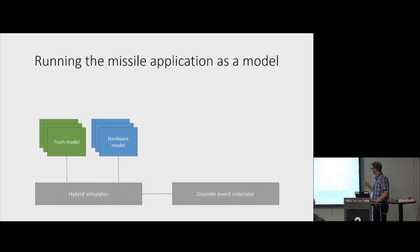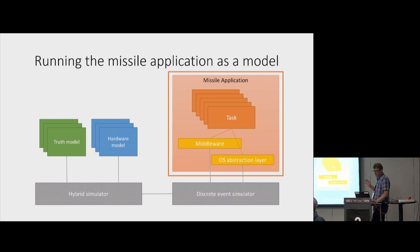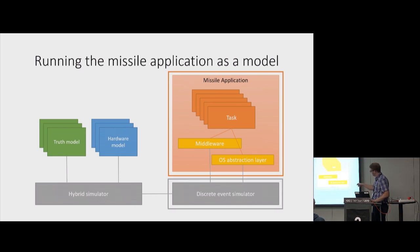The simulation framework is actually composed of two simulators. We have a hybrid simulator on the left-hand side handling the models, and we have created a discrete event simulator on the right-hand side which controls the execution of the missile application. We needed to find a way to execute it in our simulator — to see what requirements the missile application needs to fulfill in order to run in a simulation, and what a discrete event simulator actually is.